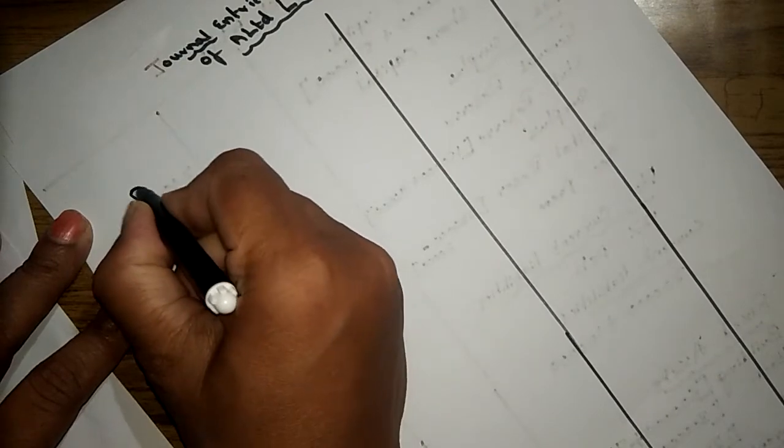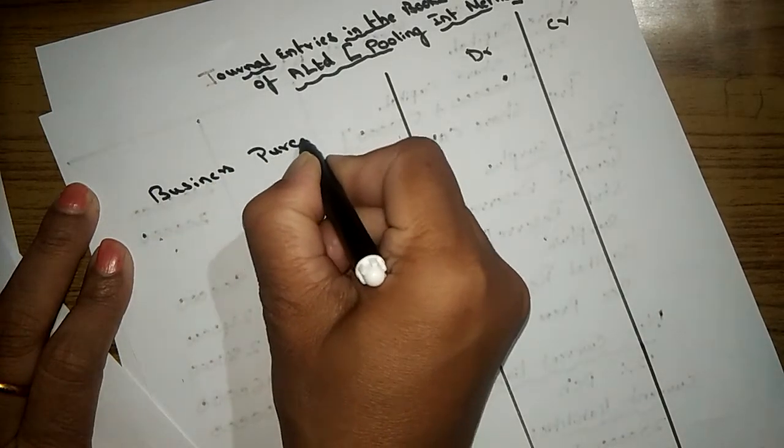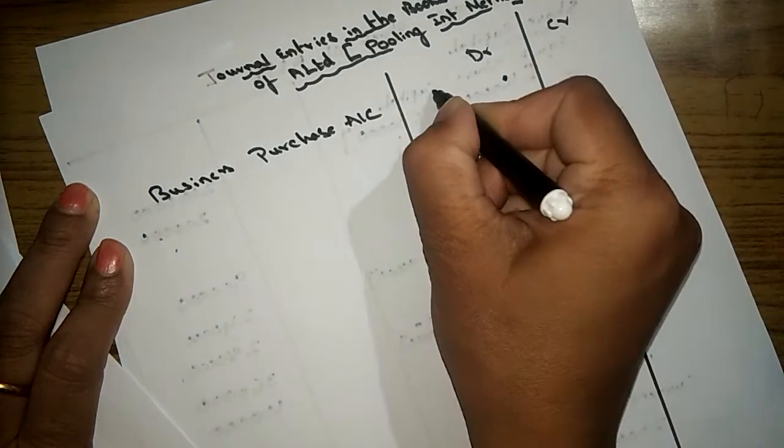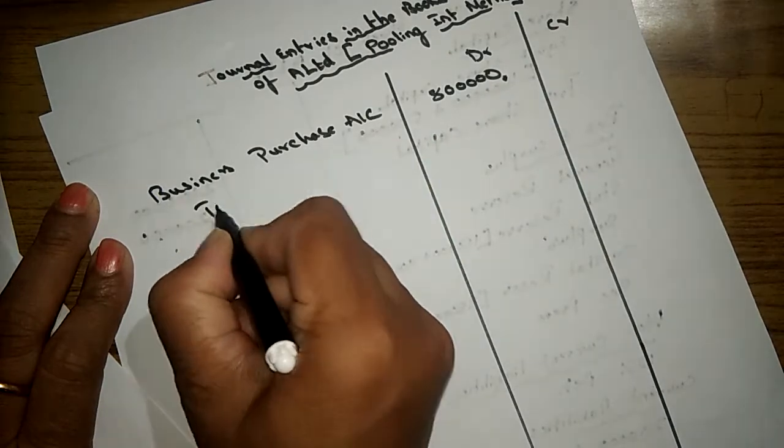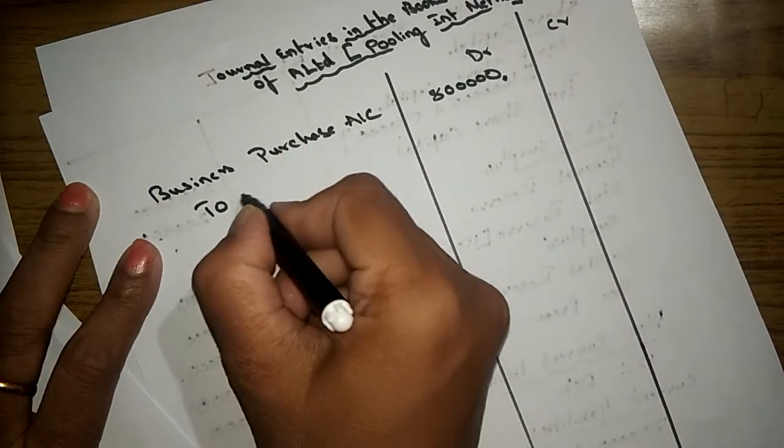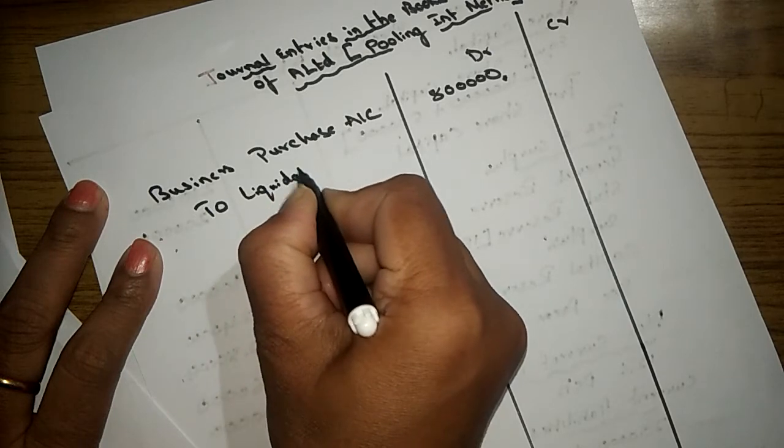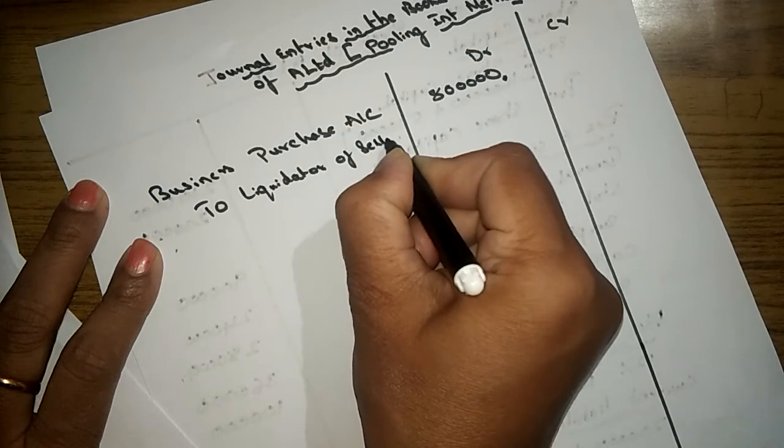The first entry: there will be no difference in the first entry. Business purchase account 8 lakhs to liquidator of selling company 8 lakhs.